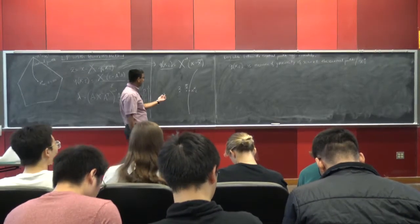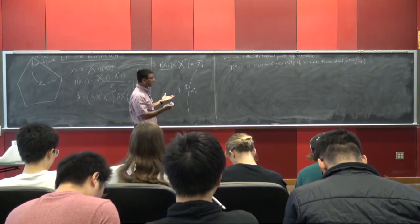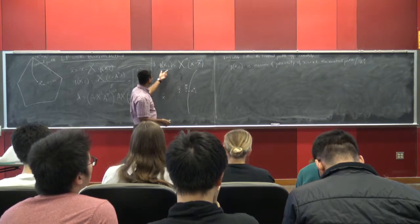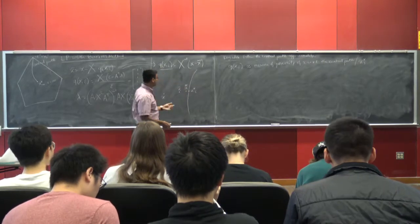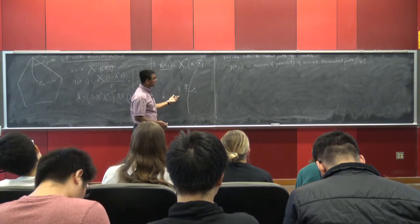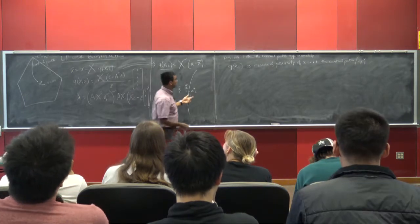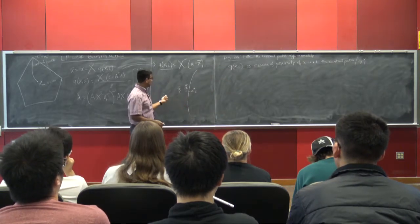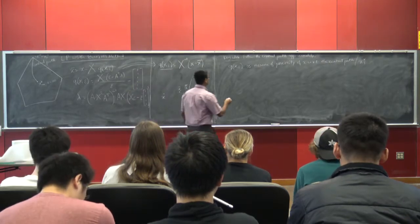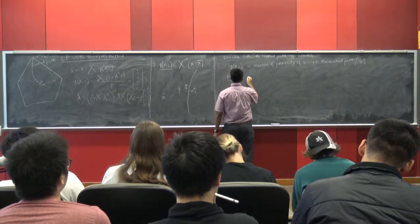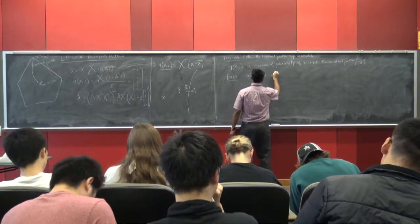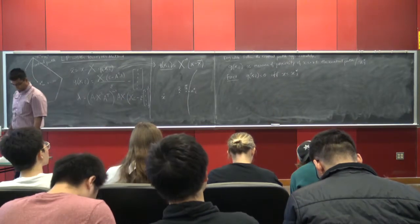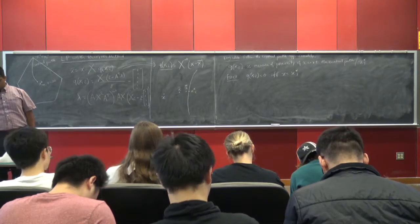Since x_bar is very close to x*(epsilon) because we are taking a Newton step, Q(x, epsilon) — expressed in terms of x − x_bar — measures the proximity of x with respect to the central path. If Q(x, epsilon) is small, then x is very close to the central path. If Q(x, epsilon) is large, then x is very far from the central path. In particular, Q(x, epsilon) = 0 if and only if x = x*(epsilon).